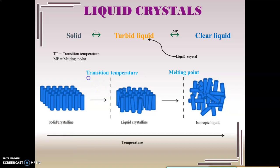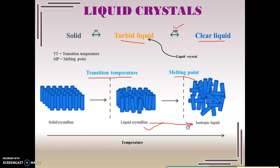We should know the difference between the transition temperature and the melting point. Once this turbid liquid state is attained, if you keep on heating, you will see that a clear liquid is obtained after some time. This temperature at which the clear liquid is formed is called the melting point. Continuing from the liquid crystalline state, you finally get an isotropic liquid state — a pure liquid state wherein the molecules are randomly arranged without fixed positions. This temperature at which such change takes place is called the melting point.